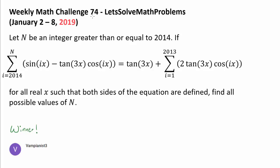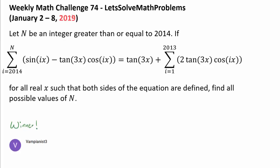It's time to wrestle with the 74th weekly math challenge, which was the first one for the year 2019. Let n be an integer greater than or equal to 2014. If the summation from i equals 2014 to n of sine of ix minus tangent of 3x times cosine of ix equals tangent of 3x plus the sum from i equals 1 to 2013 of 2 tangent of 3x times cosine of ix, for all real x such that both sides are defined, find all possible values of n.